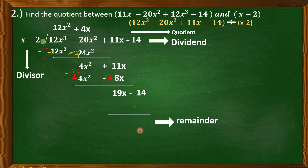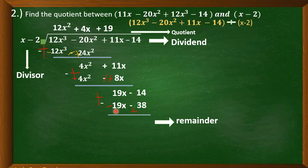Bring down negative 14. Divide 19x by x — that equals 19. Multiply: 19 times x is 19x, and 19 times negative 2 is negative 38. Subtract by changing the sign: 19x becomes negative 19x and negative 38 becomes positive 38. Proceed to addition: 19x plus negative 19x equals 0, and negative 14 plus positive 38 equals positive 24. So 24 is our remainder and 12x squared plus 4x plus 19 is the quotient.